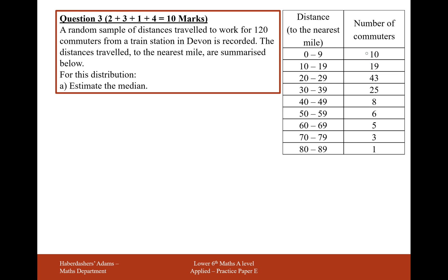The question here gives us a set of data of distances to work from 120 commuters from a train station in Devon. The distances travelled are in the nearest mile, summarized below. For the distribution, estimate the median.